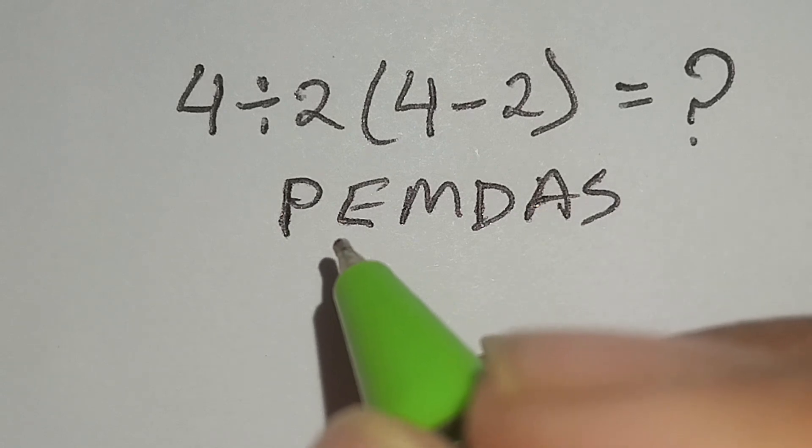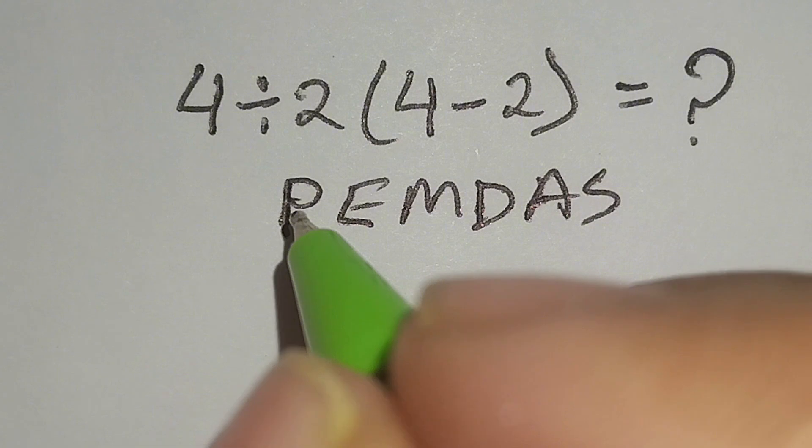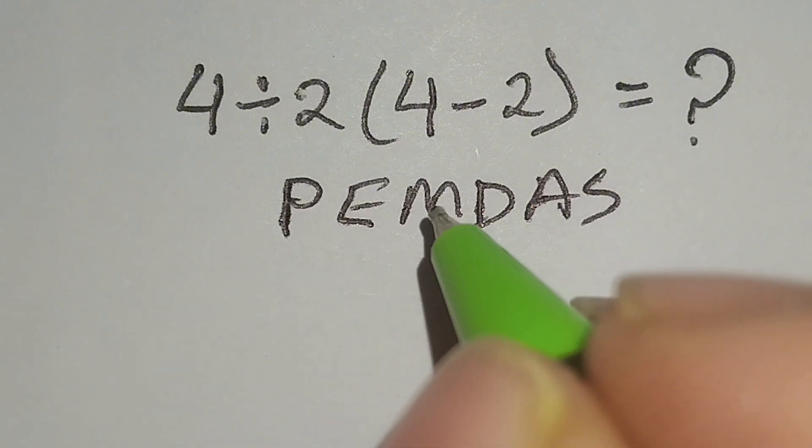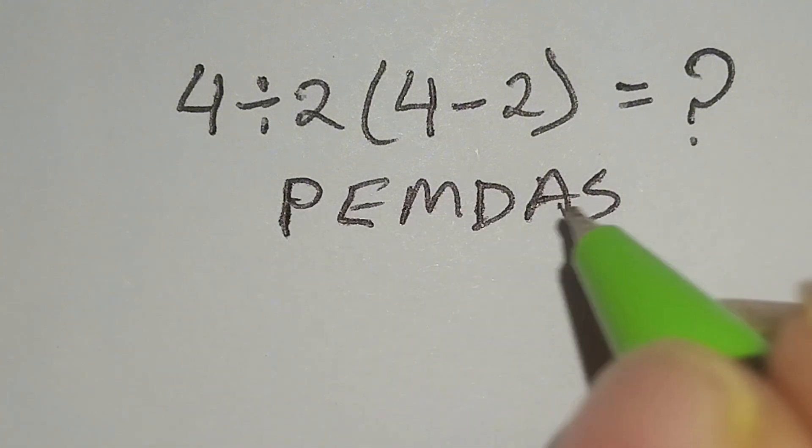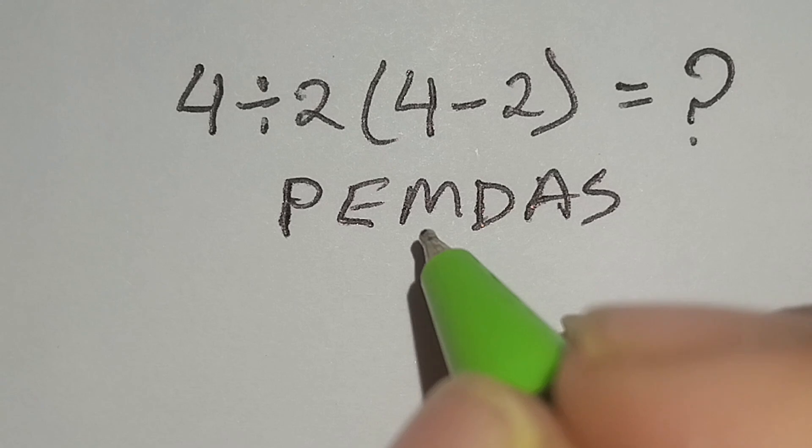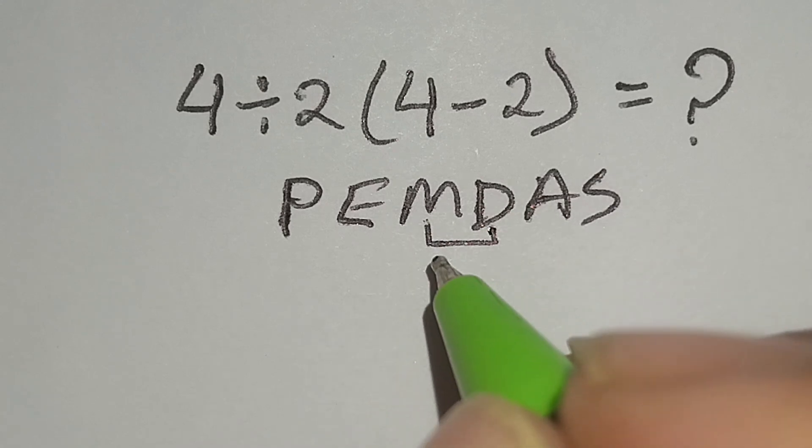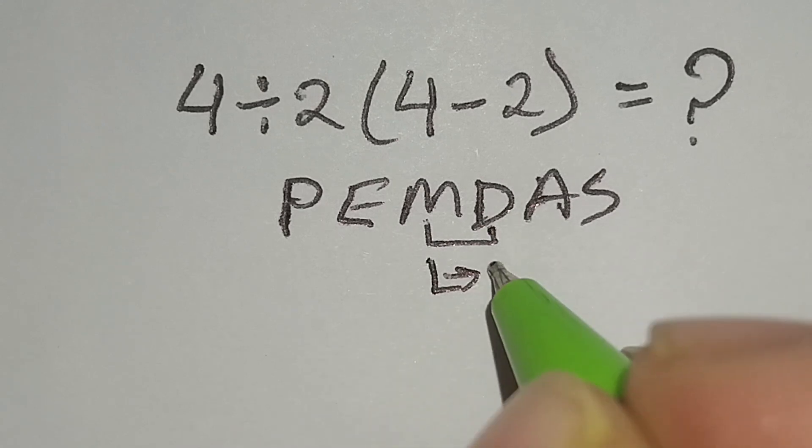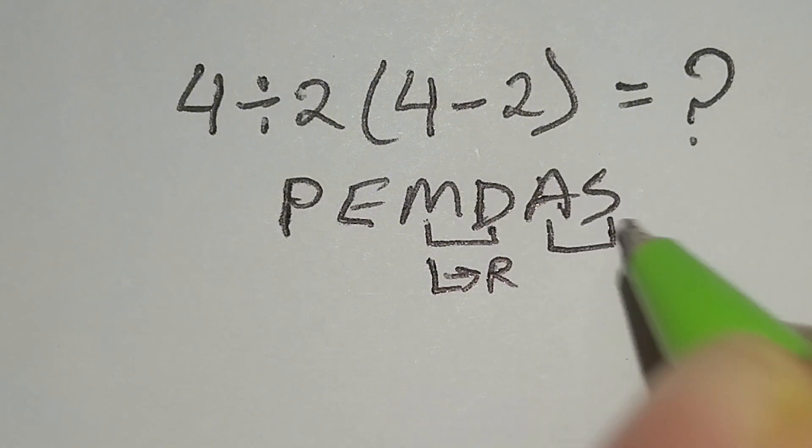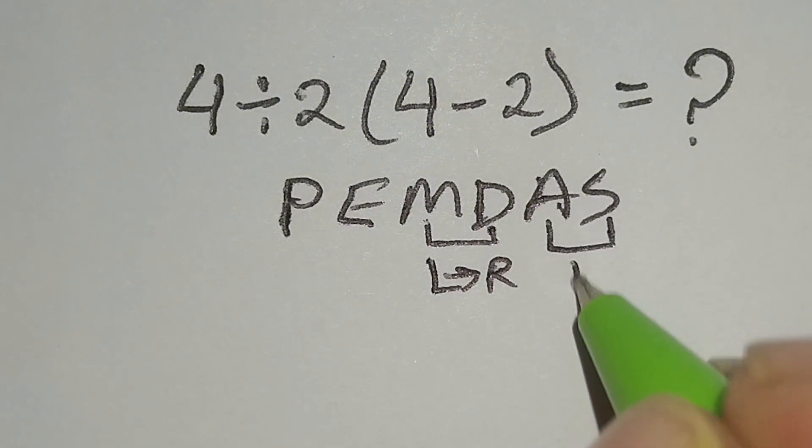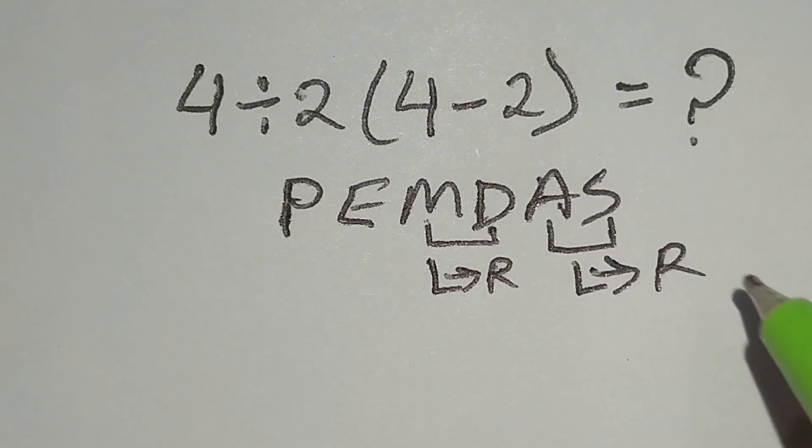According to the PEMDAS rule, first we have to work with parenthesis, then exponent, then multiplication or division, then addition or subtraction. Remember, multiplication and division have same priority, so we work left to right. Addition and subtraction also have same priority, so we work left to right.